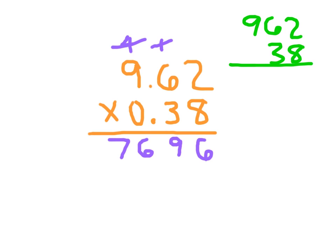Cross out our regroups. Now working with that 3. That 3 is worth 30, so we place a 0. 3 times 2, which is 6. 3 times 6, which is 18. Place the 8, regroup the 1. 3 times 9, which is 27, plus 1, which is 28. And then add those two numbers together.